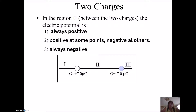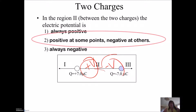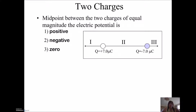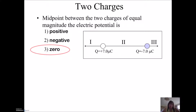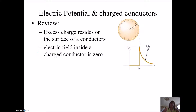In the region between the two charges — region two — the electric potential is what? Always positive? Positive at some points, negative at others? Or always negative? If you said positive at some points and negative at others, you're right, because you're doing an algebraic sum of KQ over R. When you're over here you'll have a positive voltage, and when you're over here you'll have a negative voltage. Now, the midpoint between two charges of equal magnitude — is the electric potential positive, negative, or zero? Because these are equal but opposite charges, the midpoint between them is zero for potential. Is it zero for electric field? No, because that's a vector — those will add together.